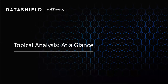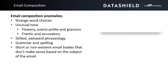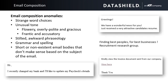So this will be the very quick at-a-glance portion of our analysis. The first thing you see in an email is the text. So we're looking at unusual word choices and unusual tone — it's one of those things where you know it when you see it. We've got a few examples here, all from real phishing emails. Things like 'Greetings, I have a wonderful news for you' — these aren't how people talk. If you're a native speaker, these aren't choices you would make. 'Finding best peoples for best business' — this is clearly some kind of non-native speaker trying to compose an email that sounds professional.